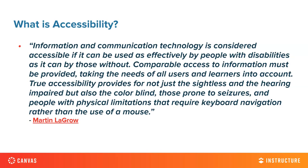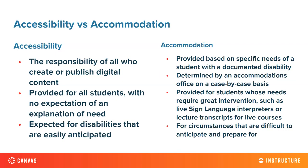I'm going to be talking about ideas that extend beyond what Martin has described. But sometimes people get a little bit confused between accessibility and accommodation. Accessibility is the responsibility of everyone who creates course content, whether it's Canvas or any other learning management system or software as a service. It provides for all students with no expectation of an explanation of need — it's expected for disabilities that are easily anticipated.